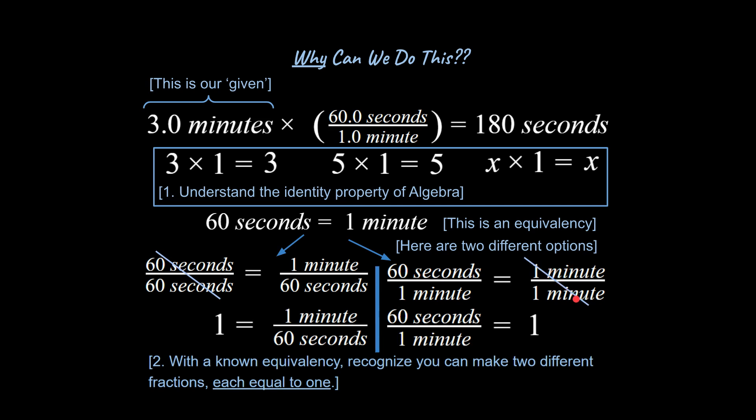And the same thing can be true for this one minute over one minute. That reduces to one. And so the second strategy I want to emphasize here is with a known equivalency, recognize you can make two different fractions, each equal to one. And so I've shown that this fraction is equal to one. This fraction is equal to one.